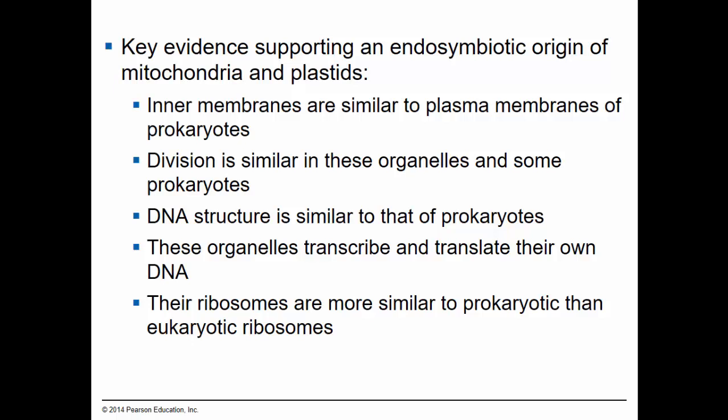These organelles are also capable of transcribing and translating their own DNA independently of the transcription and translation of nuclear DNA inside eukaryotes. We've also found structural similarities between the ribosomes of these plastids and the ribosomes of free-living prokaryotic cells. They are much more similar to one another than either is to the eukaryotic ribosomes found in the cytoplasm and the endoplasmic reticulum.